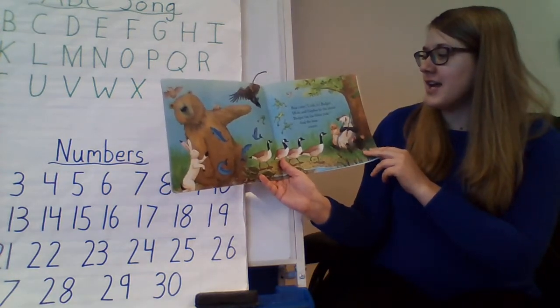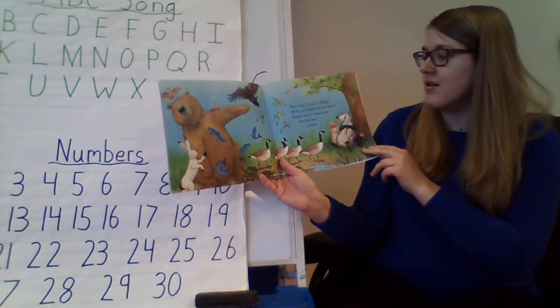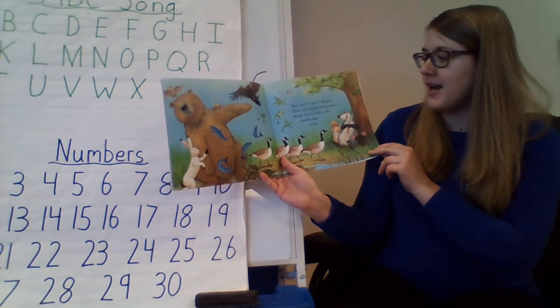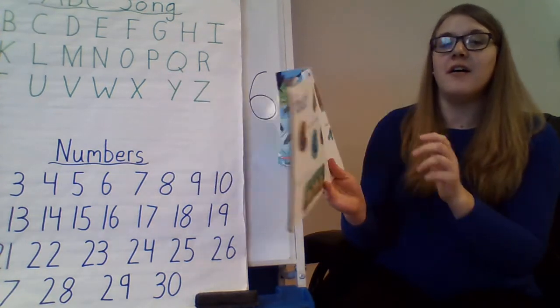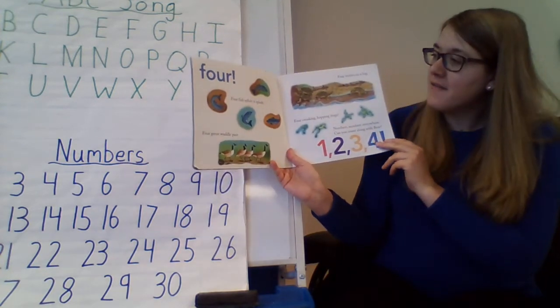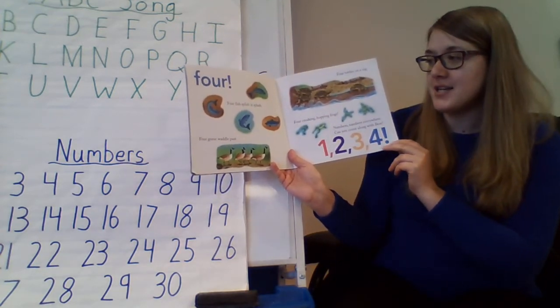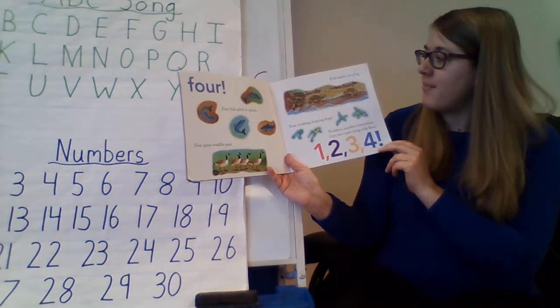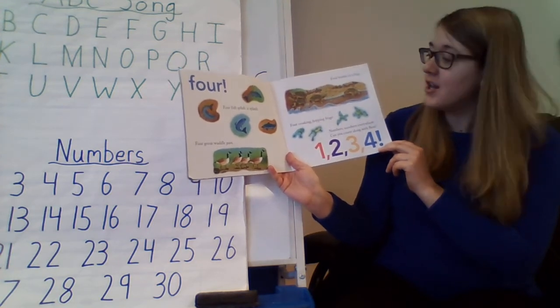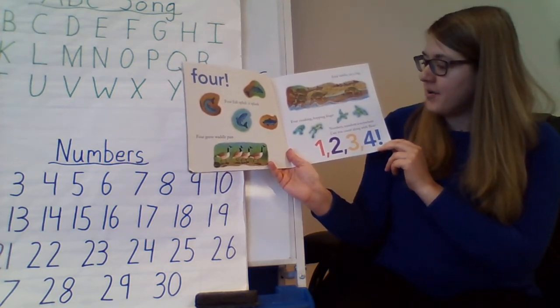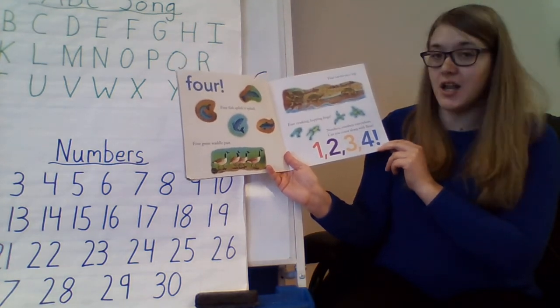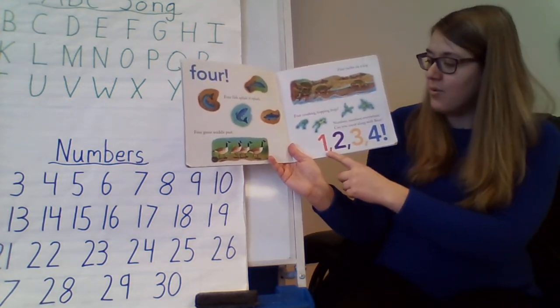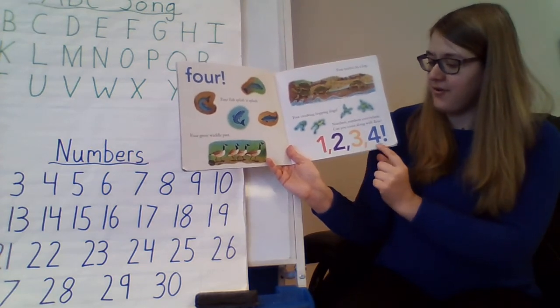Bear cries, look, it's Badger, Mole and Gopher by the shore. Badger has his fishing pole, and the bear counts four. Four fish splish and splash, four geese waddle past, four turtles on a log, four croaking hopping frogs. Numbers, numbers everywhere. Can you count along with Bear? One, two, three, four.